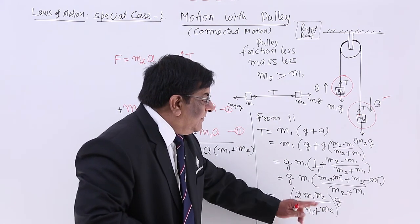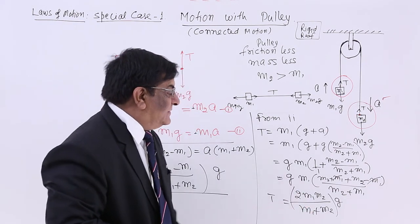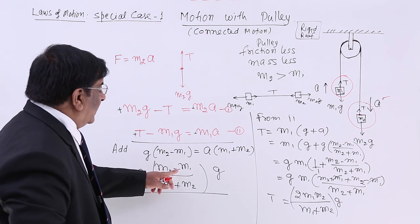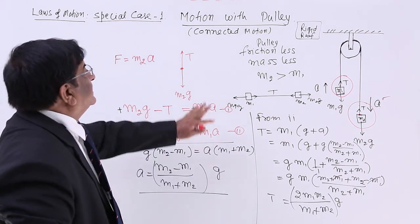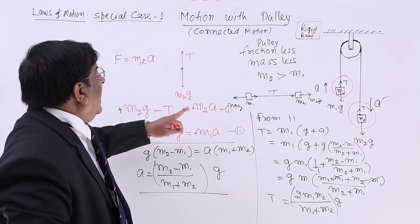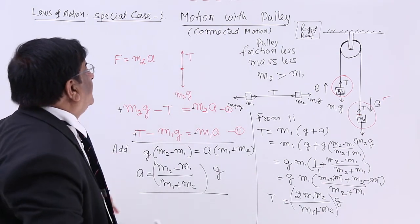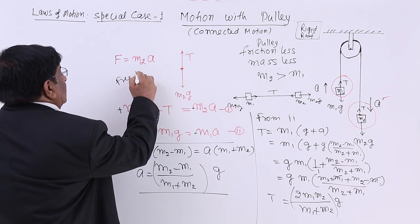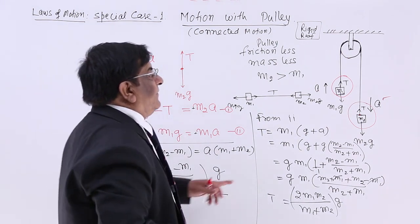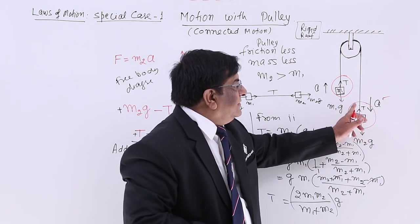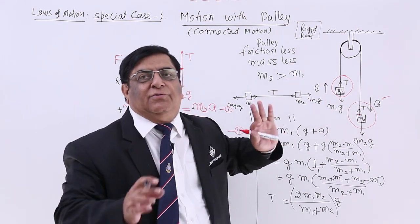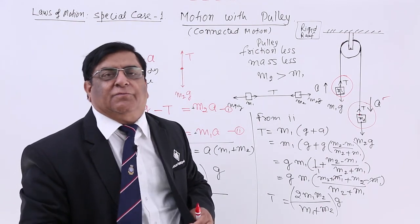So this is how we solve one type of connected motion — motion with a pulley. We took help of the free body diagram: once at M2 and once at M1. We did not have to combine them in a complicated way; we got everything we wanted — the acceleration and the tension in the string.